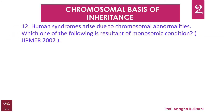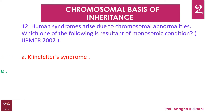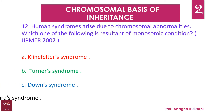Question number 12: Human syndromes arise due to chromosomal abnormalities. Which one of the following is the result of a monosomic condition? A) Klinefelter syndrome, B) Turner syndrome, C) Down syndrome, D) Edwards syndrome. The correct answer is B — Turner syndrome.